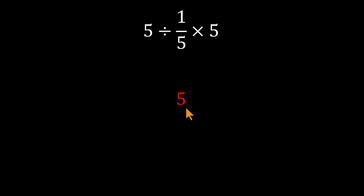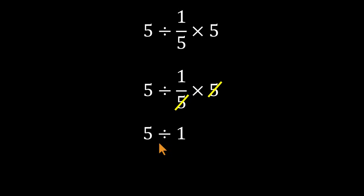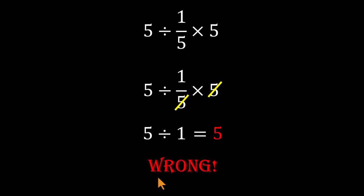Here's how most people get there. They see the fraction 1 over 5 and immediately want to clean it up. So they multiply 1 fifth by 5. The 5s cancel, and that leaves 1. Now the expression looks like 5 divided by 1, which gives 5. Neat, fast, and wrong.